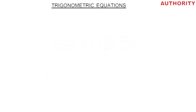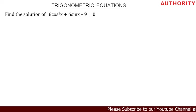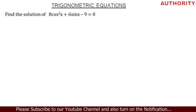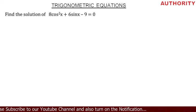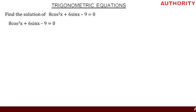Today let's talk about trigonometric equations. We're going to solve equations involving trigonometric functions. The problem says: find a solution of 8cos²x + 6sinx − 9 = 0, for x greater than or equal to 0 and less than or equal to 2π. Let's go — we have 8cos²x + 6sinx − 9 = 0, and we need to solve it.